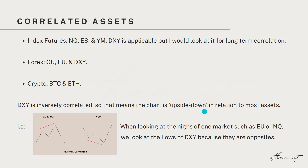Here's an example where this chart on the left is EU or NQ, and this chart on the right is DXY. When EU or NQ makes a higher high, on DXY, since it's inversely correlated — meaning it's upside down — we're looking at the lows when we're looking at the highs on EU. So if we're looking at the highs on EU or NQ, then on DXY we're looking at the lows, as they are inversely correlated.